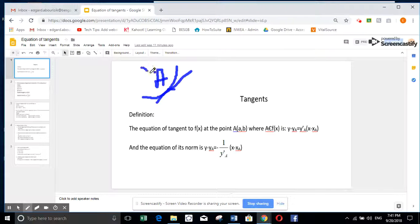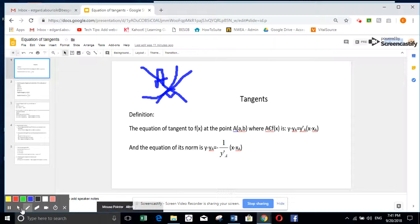And if you want to do the normal to that line, it's the same because I have the same point, but the slope will be inverse and opposite sign. So it will be minus one over y prime of a.